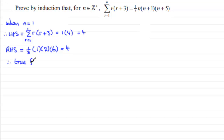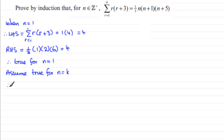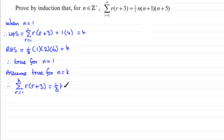So it's true for n equals 1. Now we assume it is true for some particular value of n — assume true for n equals k, where k is a positive integer. That means the summation from r equals 1 to k of r multiplied by r plus 3 equals one third k multiplied by k plus 1 multiplied by k plus 5.